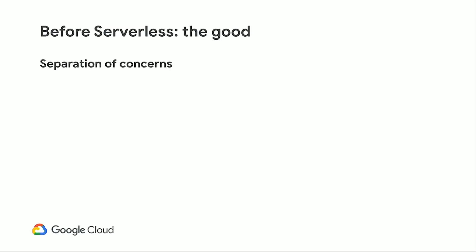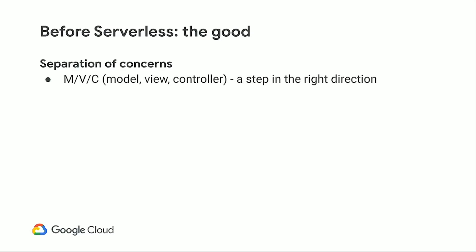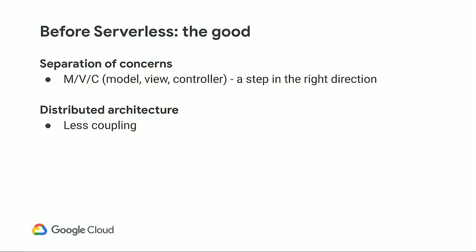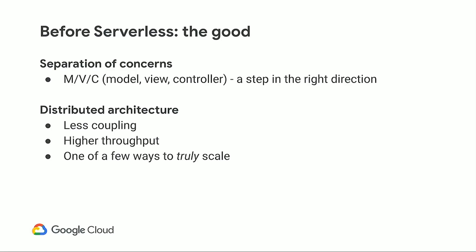If you're coming from the old application development world, you might have heard of the MVC idea — Model-View-Controller. You take a client-facing application and break it down into three components: models are your database schema, views are your front end, and controllers are your business logic. This was a step in the right direction, but we can do better. Another thing we want to keep is how we do distributed architecture — it gave us less coupling and higher throughput, and is one of the few ways to truly scale, since vertical scaling only works to a point and horizontal scaling is by definition a distributed system.